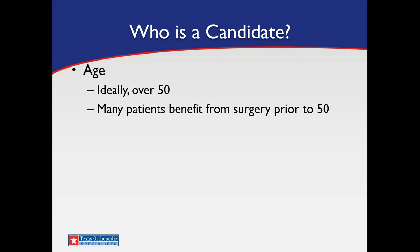For standard wear-and-tear bone-on-bone arthritis, we really like to get patients into their 50s. The reason is that the plastic part doesn't last forever, and we want to limit the number of surgeries. However, if a patient is 40 years old with severe arthritis, making him wait 10 years causes 10 years of unnecessary pain. So 50 is the age I shoot for, but I'm not strict on it.